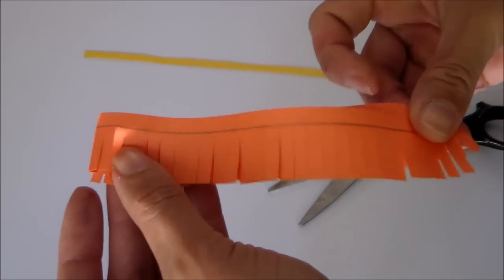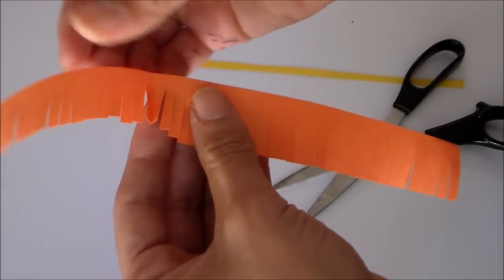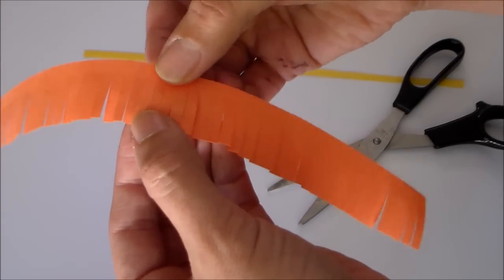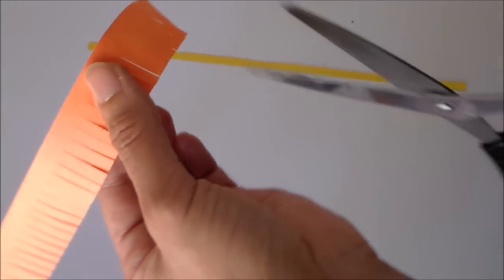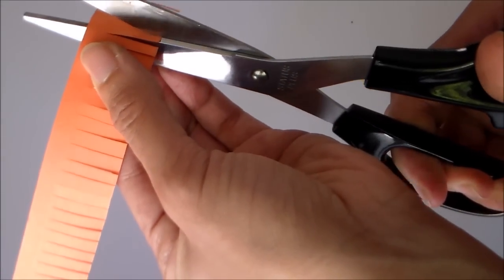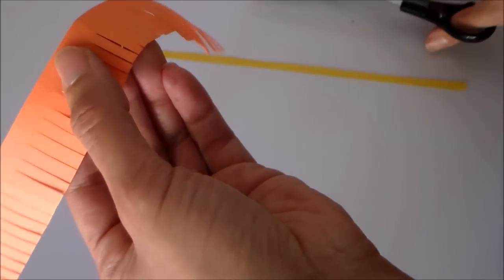When you get to the end, go ahead and open it up. Usually when you fold your paper in half, there's going to be a wider piece in the middle. Go ahead and cut through that to make it a narrower cut.